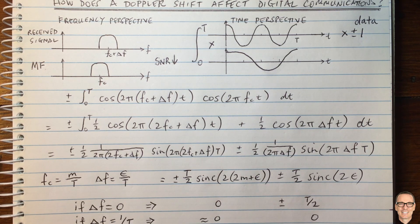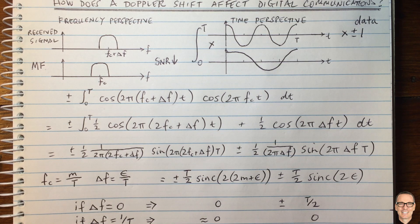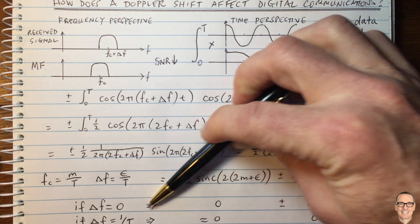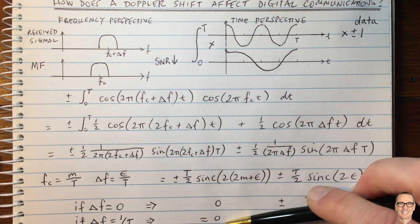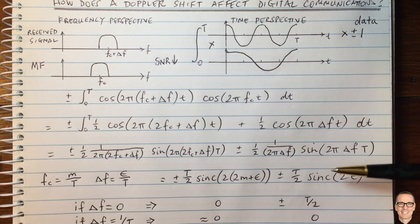And let's look at one particular extreme case here, when delta F equals one divided by capital T. So in this case, this term here, as we said, is still approximately zero. But this term here, so when delta F equals one on T, that means epsilon equals one.